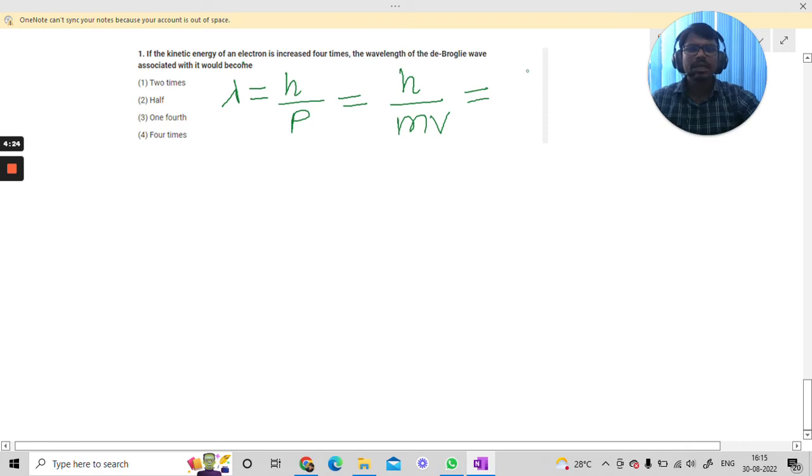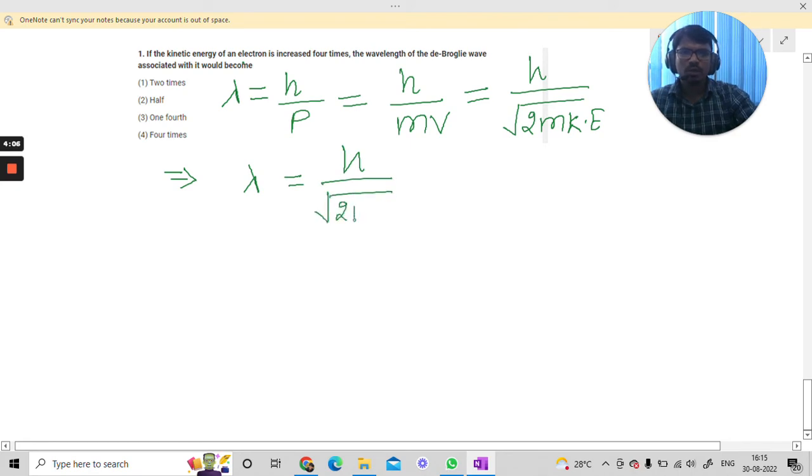Further it can be written like Planck's constant divided by mv, and further it can be written like Planck's constant h divided by the square root of 2m times kinetic energy.